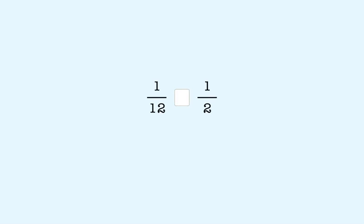Let's look at another example: 1 twelfth and 1 half. The number with the larger denominator is the smaller number, so 1 twelfth is less than 1 half.